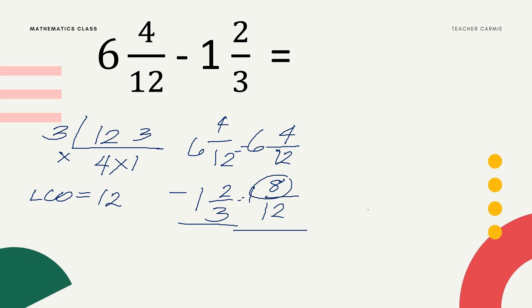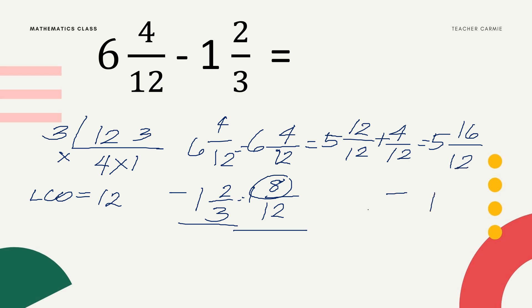As we can see, 8 is greater than 4, so we will borrow. We will borrow 1 from 6, making 6 become 5. The borrowed 1 is placed as a fraction with the same denominator: 12 over 12. So we add 12 plus 4 equals 16. The expression becomes 5 and 16/12 minus 1 and 8/12. Subtract: 16 minus 8 equals 8 over 12. 5 minus 1 equals 4. So the answer is 4 and 8/12.